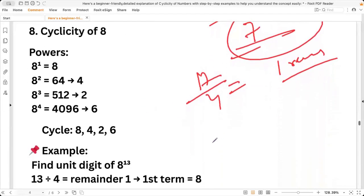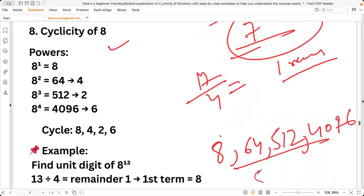Now let's see cyclicity of eight. So 8^1 is eight, eight square is 64, eight cube is 512, eight to the power four is 4096. So it moves like eight, four, two, six. This is the cyclicity of eight.